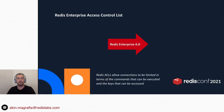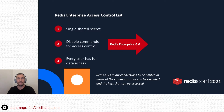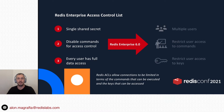Now, before we continue, let me do a short recap of ACLs in Redis Enterprise. Redis Access Control List, which was introduced in Redis 6, is the feature that allows connections to be limited in terms of the commands that can be executed and in terms of the keys that can be accessed. Instead of having to share a single password, disable commands to limit access, and where all connections and users would get full data access — Redis ACLs allow you to create and use multiple different users, restricting each one of them to specific commands and specific keys.